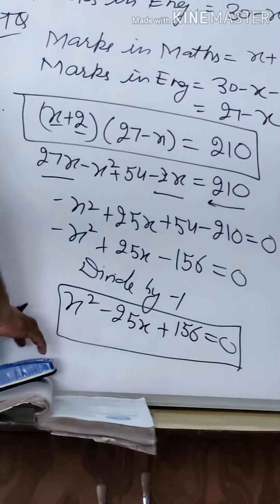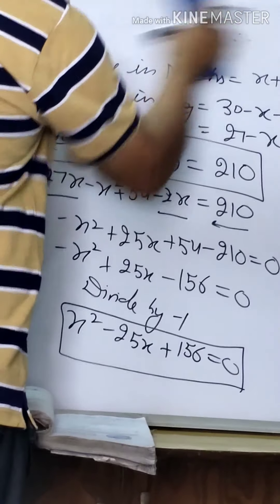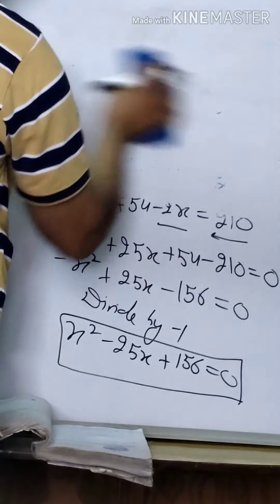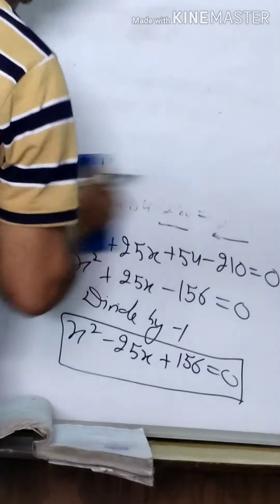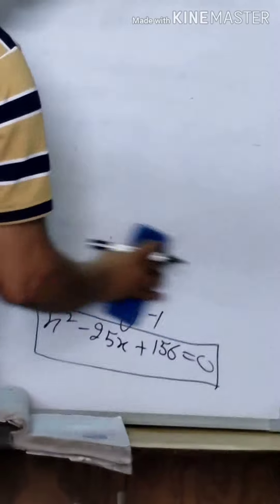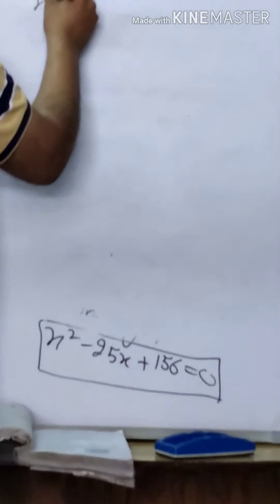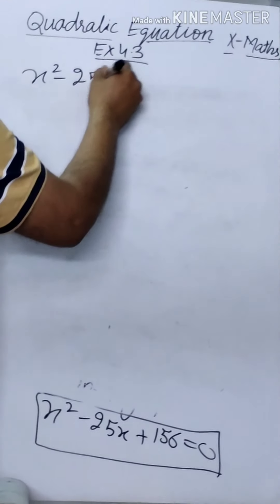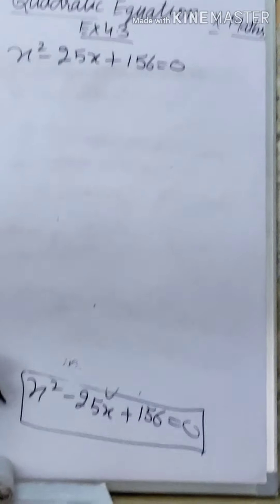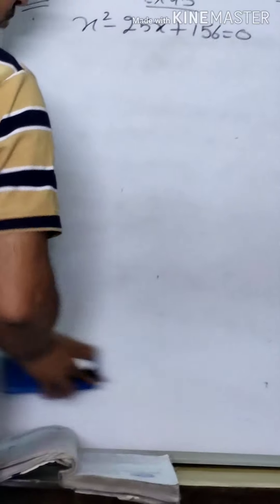So the equation is x² - 25x + 156 = 0. My students, check whether factorization is possible or not. If not possible, then use the D method, meaning the quadratic formula, to find the roots of this equation.